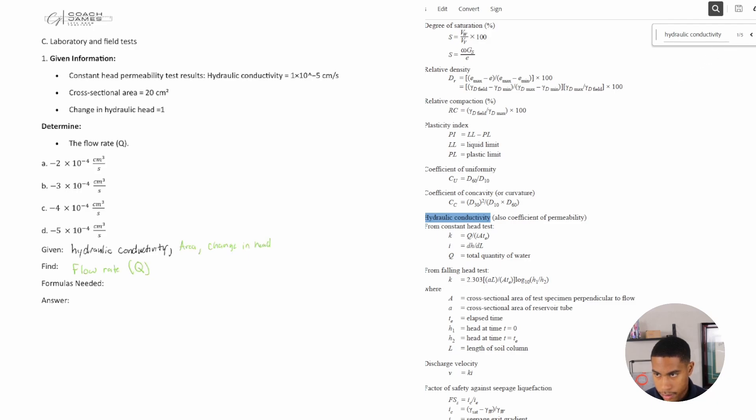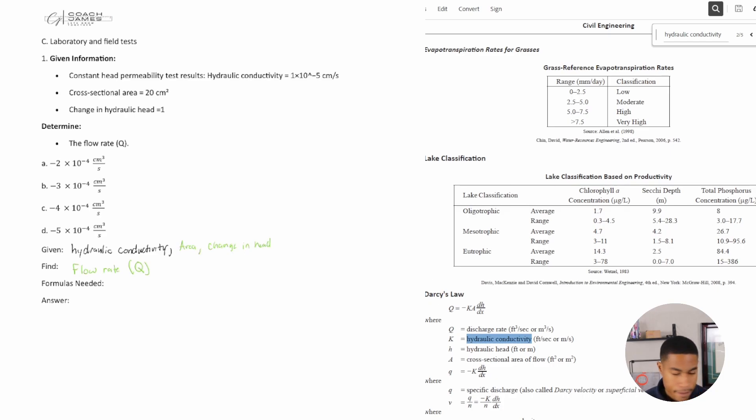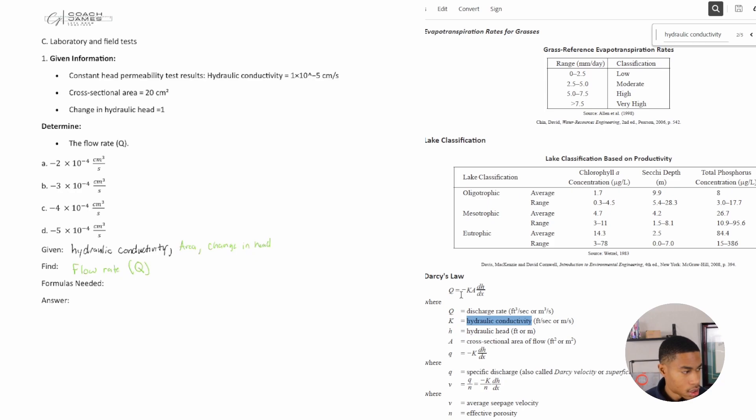Darcy's law: we have negative K, which is the hydraulic conductivity, which we do have. What about A, the cross-sectional area of flow? We have that. So Q is equal to negative KA, and Q is my flow or discharge rate—flow rate, same thing.